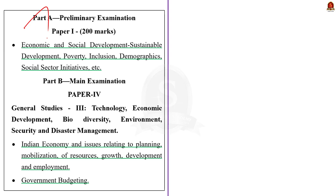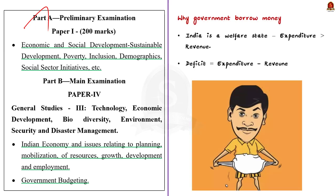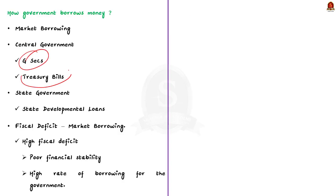Why does a government need to borrow money? In a welfare state like India, it is not a surprise that government expenditure is more than government revenue. This difference between government expenditure and revenue is called a deficit. To address this deficit, the government borrows money from the market. The union government borrows by issuing government securities and treasury bills, while state governments borrow by issuing state developmental loans. The amount the government needs to borrow to address the deficit equals the fiscal deficit.